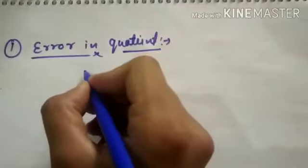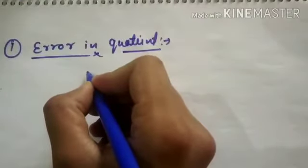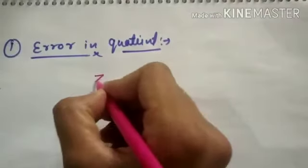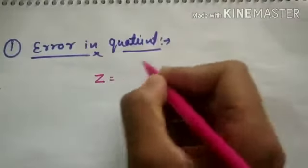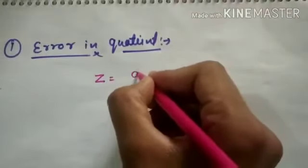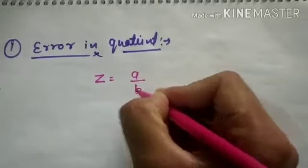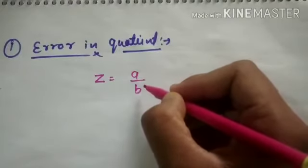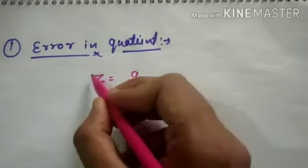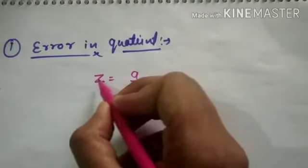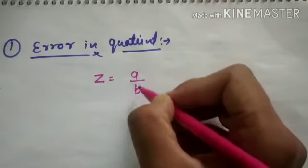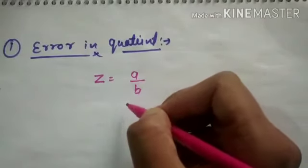Let's consider that we have a physical quantity Z, such that Z equals A upon B, where A and B are two physical quantities, and Z is another physical quantity given by the ratio of A and B, or the quotient of A and B.